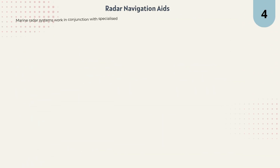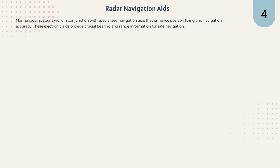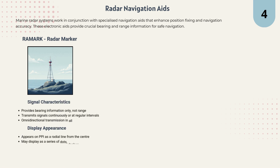Let's look at the navigation aids that work together with radar. Radar doesn't work alone — it often works in conjunction with specialized navigation aids that improve position fixing and accuracy. The two most important are Ramark and Racon. Ramark, or radar marker, provides bearing information only. It transmits signals continuously or at set intervals, and its coverage is omnidirectional — it radiates in all directions. On the radar display, Ramark appears as a simple radial line from the center, sometimes as a series of dots or dashes, and sometimes as a continuous line.